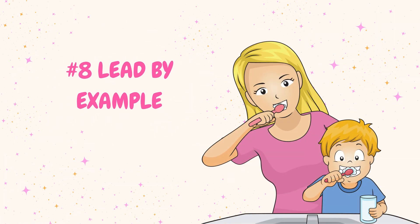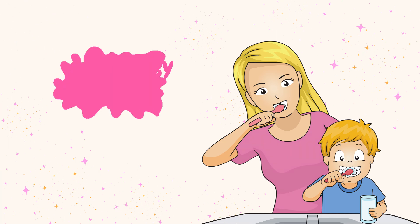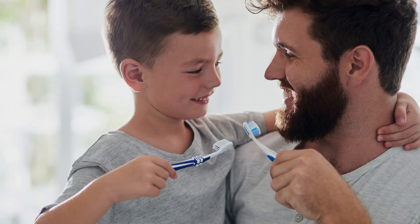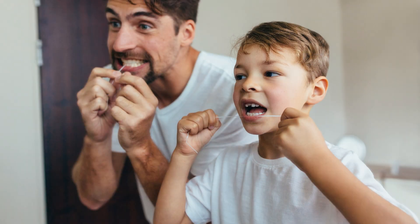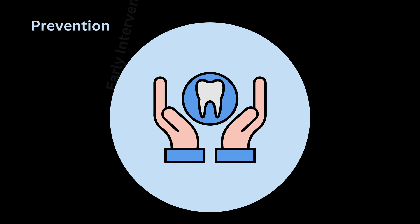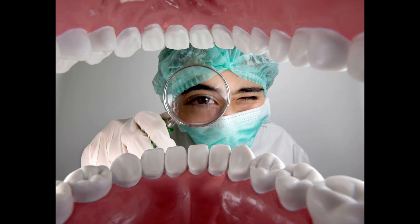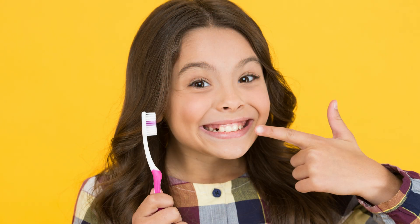Number eight: lead by example. Children often learn from their parents, so make oral hygiene a family affair. Brush and floss together to demonstrate good habits. Remember, early intervention and prevention are fundamental to maintaining healthy teeth and gums. Regular oral hygiene practices and healthy habits from a young age lay the foundation for good oral health throughout a child's life.